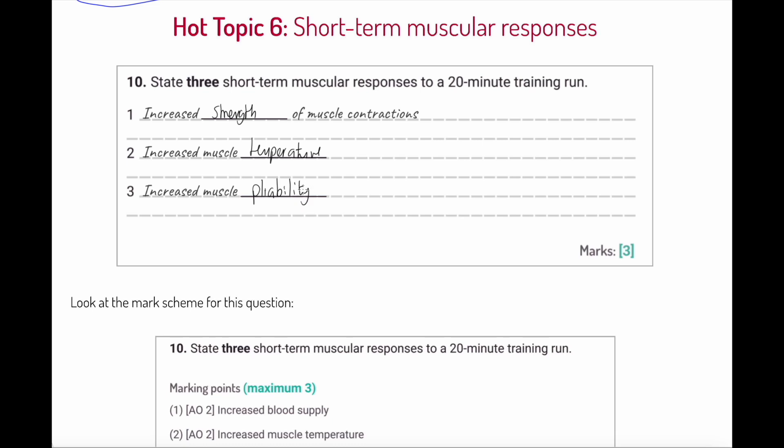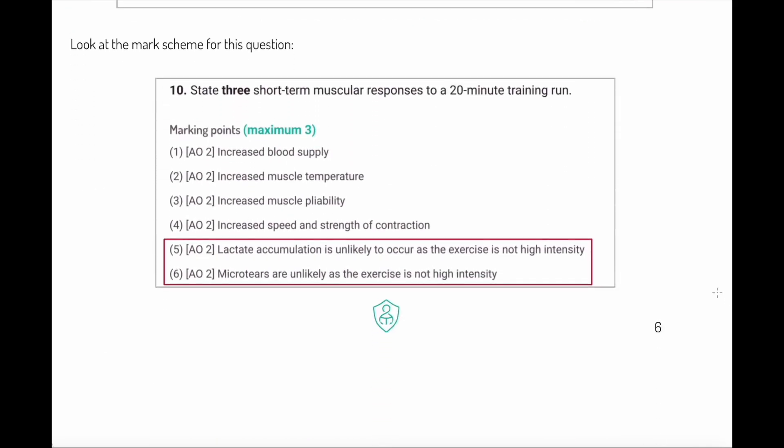We're also going to get increased muscle pliability. The muscles are going to be able to apply their force through a greater range of motion. Each of those picks us up one mark. Let's have a look at this mark scheme. Nothing too surprising: we get one for increased blood supply. We didn't include that, but we got muscle temperature, pliability, and strength contraction, so we picked up three marks.